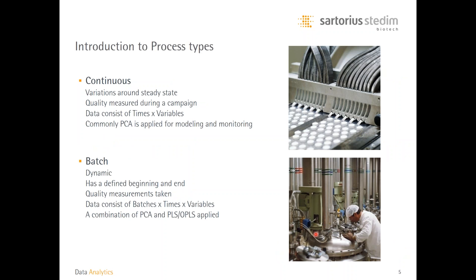We divide process data into continuous and batch scenarios. The characteristic feature of a batch process is a clearly defined beginning and end, with the process evolution measurements forming a three-way array of batches, time, and variables. We often work with a combination of PCA and regression extensions to account for all data available during a batch process.